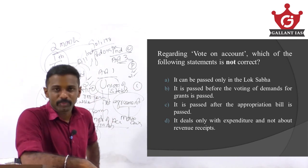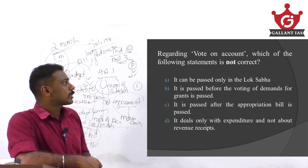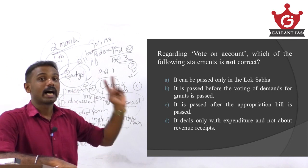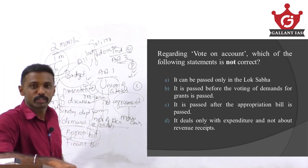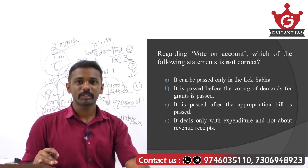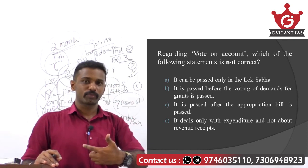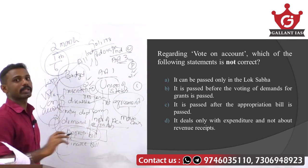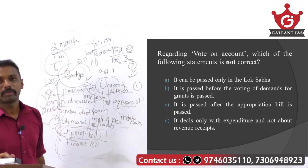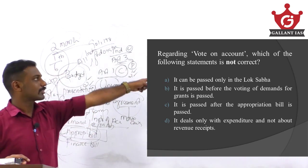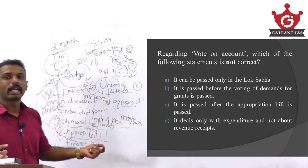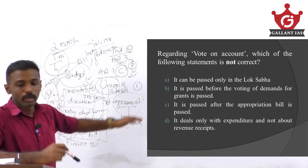Regarding the options: it can be passed only in the Lok Sabha — that is a correct statement. It is passed before the voting on demand for grants — that is also a correct statement. It is passed after the appropriation bill is passed — no, that is incorrect, because the vote on account is passed before the appropriation bill. The appropriation bill is what authorizes withdrawal from the Consolidated Fund of India with parliamentary approval. Statement 4 — it deals only with the expenditure side and not about revenue received — is a correct statement. So the answer is option C, the incorrect statement.